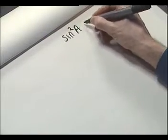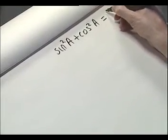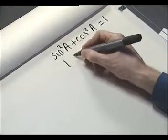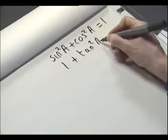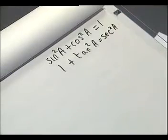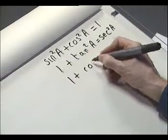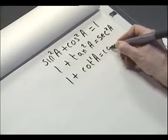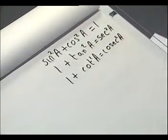So we've now got three basic fundamental identities. Let's write them down: sine squared A plus cos squared A equals 1; 1 plus tan squared A equals sec squared A; and 1 plus cot squared A equals cosec squared A. The use we're going to make of these is to help us solve particular kinds of trigonometric equations.